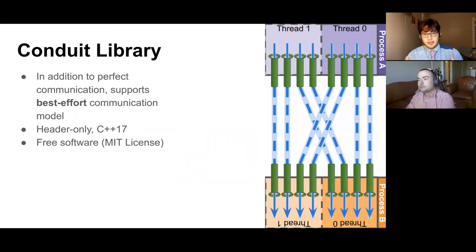Conduit is a library intended to make creating parallel simulations easier. It does this by abstracting all the inter-process inter-thread communication away from the user. We support both perfect communication and a best-effort communication model.